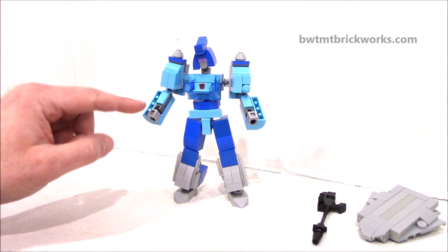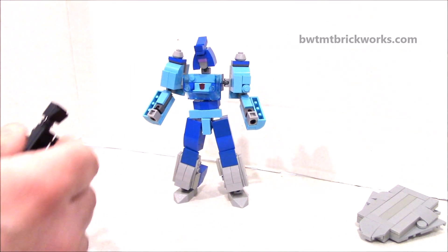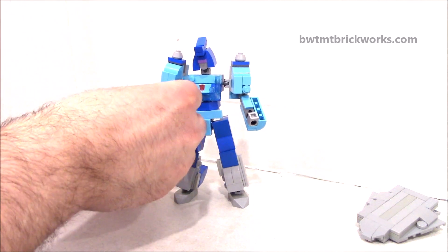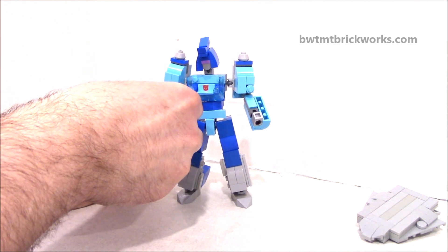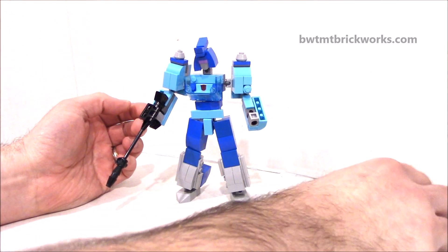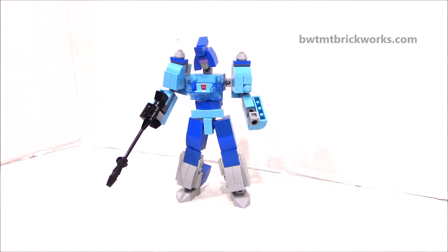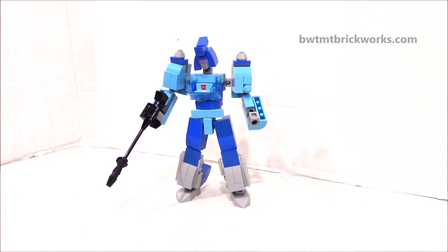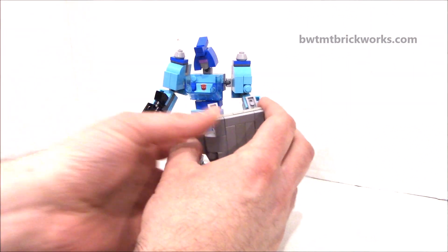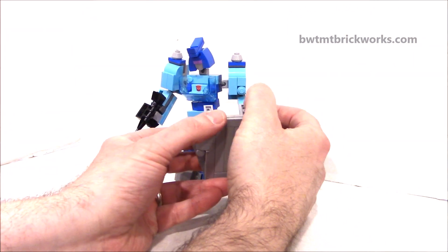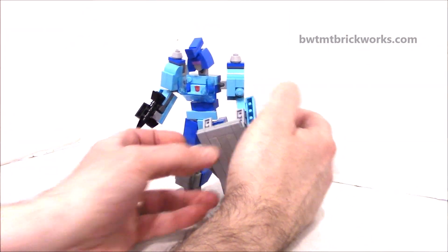Ball joints in the knees, ankles, wrists. Then, of course, we can put on his G1 homage weapons, which is a long rifle. You can just pivot down those ratchet joints and put on the shield. That's pretty cool.